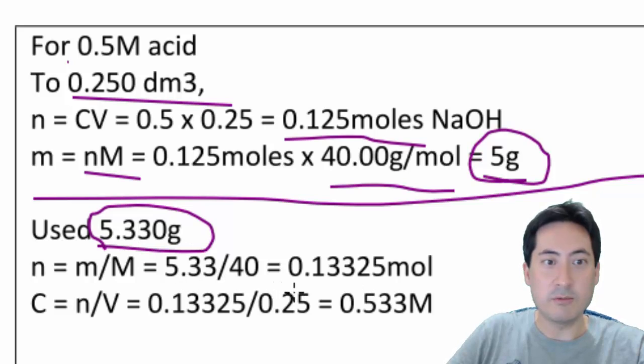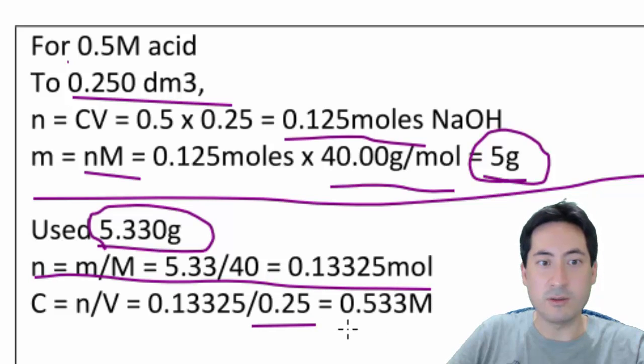And so then I have to work out what was the actual concentration I actually used. So the number of moles in 5.33 grams is 0.133 moles. And that was made up to 250 mLs. So the concentration in that volumetric flask was 0.533 molar.